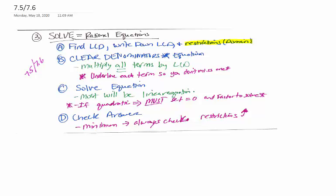We are going to clear the denominators. This is probably the most important step to be very careful on. We're going to multiply every term by the LCD. Underline your term so you don't miss one.